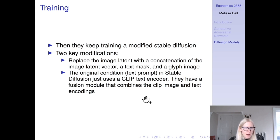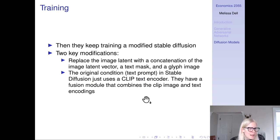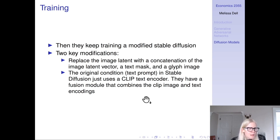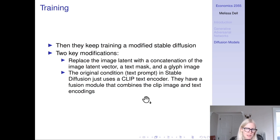To make this work for generating realistic handwriting, they replace the image latent with a concatenation of the image latent vector, a text mask, and a glyph image. Moreover, the text prompt in stable diffusion just uses the text encoder, whereas they have a fusion model that combines the CLIP image and text encodings.